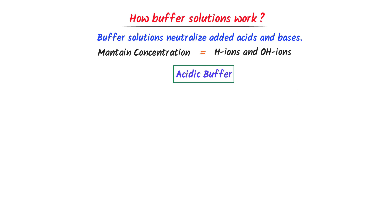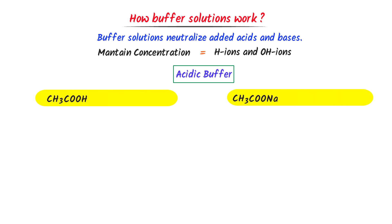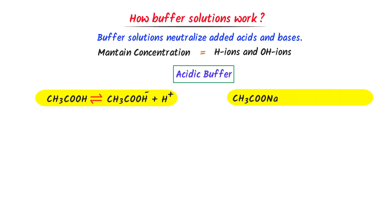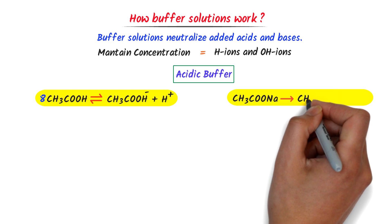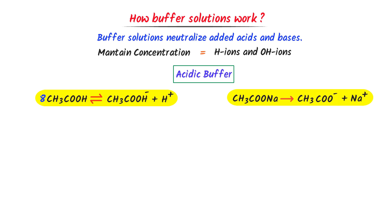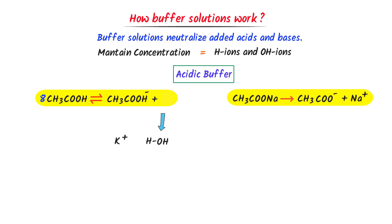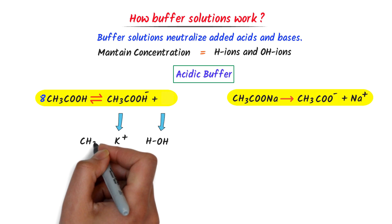For example, consider an acidic buffer solution which contains acetic acid and sodium acetate. We know that acetic acid is a weak acid which partially dissociates into acetate ion plus hydrogen ion. If there are eight acetate molecules, it will dissociate into one acetate ion and one hydrogen ion. Sodium acetate will dissociate into acetate ion plus sodium ion. Now consider that I add potassium hydroxide to this buffer solution. The hydrogen ion of the buffer solution will attack the hydroxide ion to neutralize it by making water, while the acetate ion will attack the potassium ion to neutralize it by making potassium acetate.